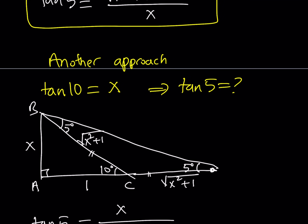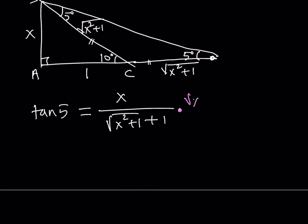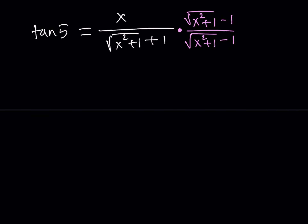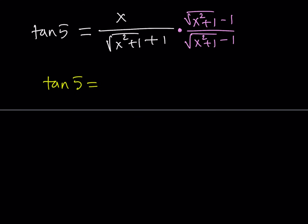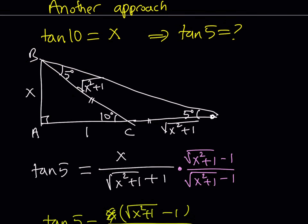Why is that not in the same form? We can use the conjugate. Multiply both the numerator and denominator by the square root of x squared plus 1 minus 1. From the difference of two squares in the denominator, you get x squared plus 1 minus 1. The 1 cancels, and x cancels with one of the x squared terms. We get tangent 5 equals the square root of x squared plus 1 minus 1, all over x — which is the same expression we found in Method 2.